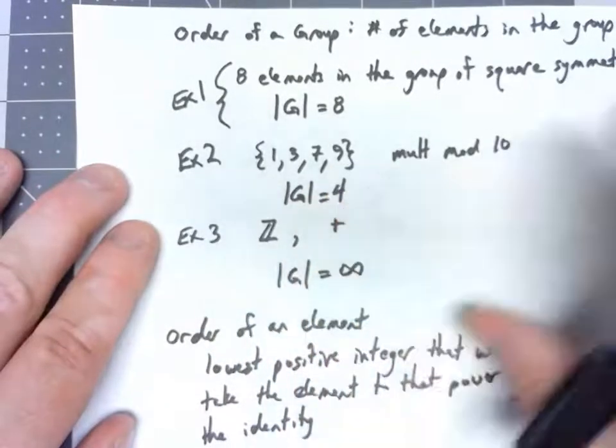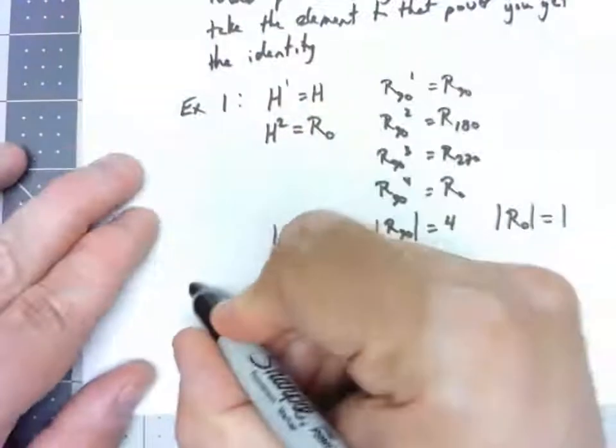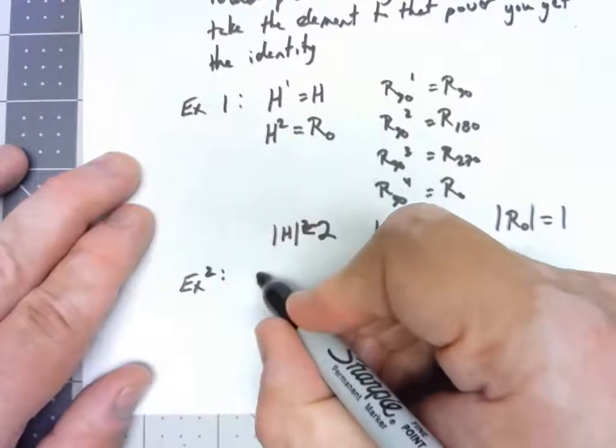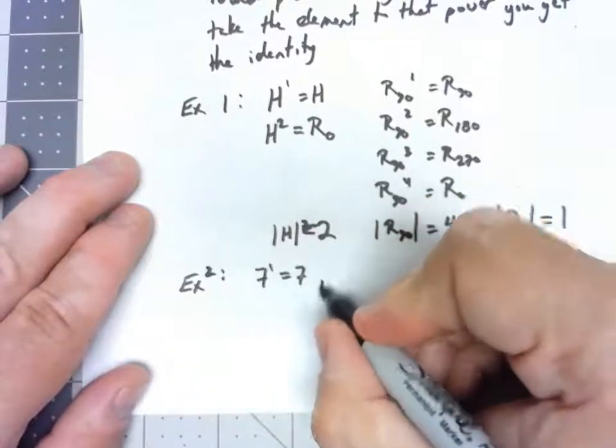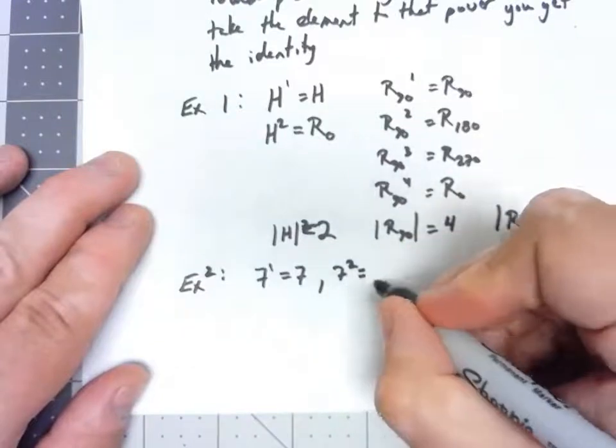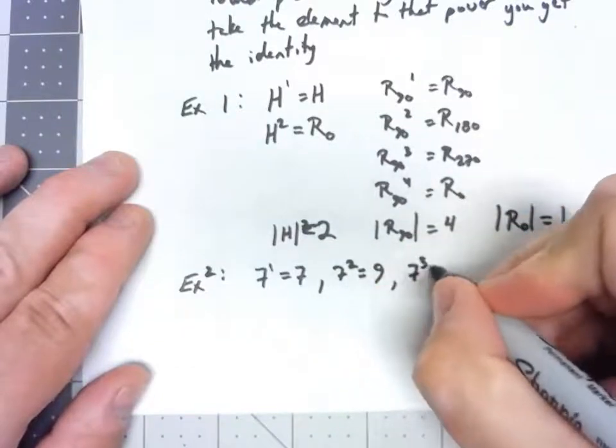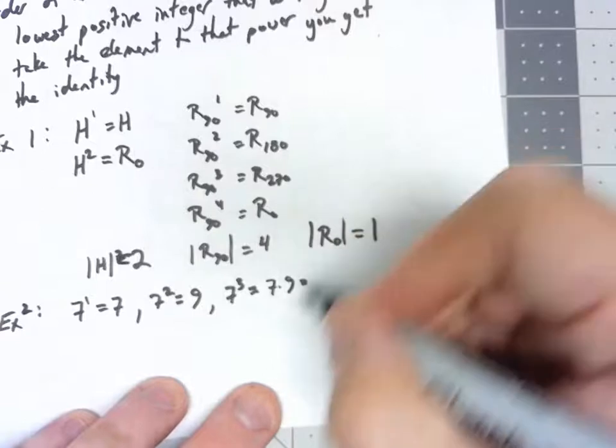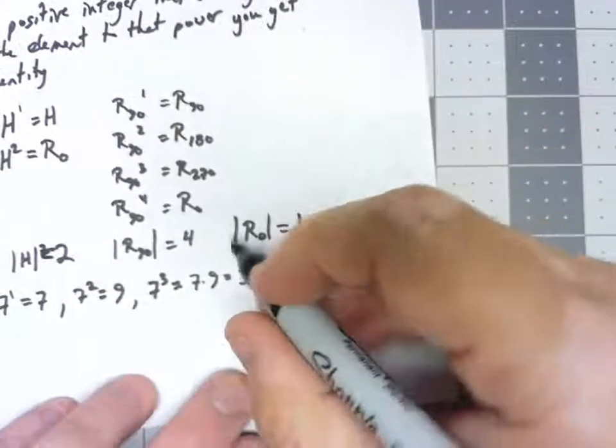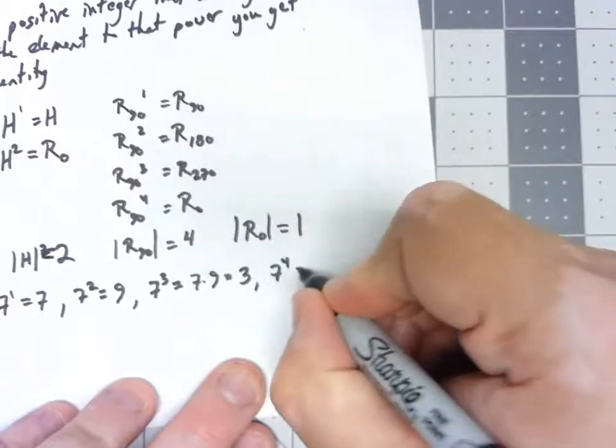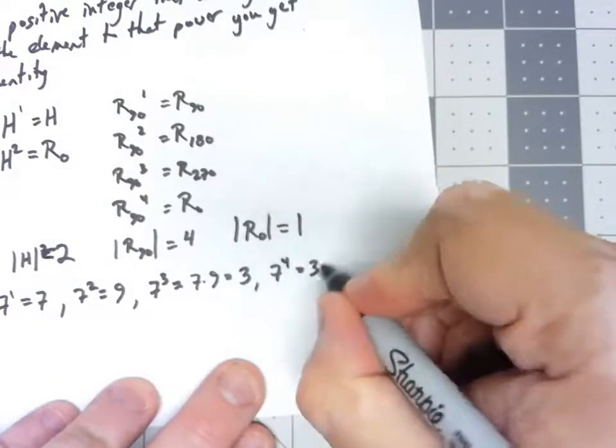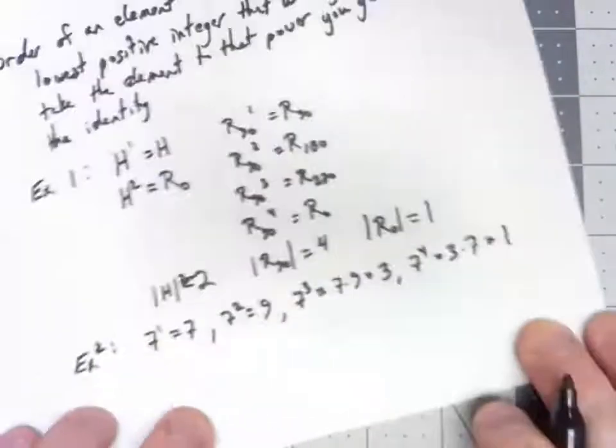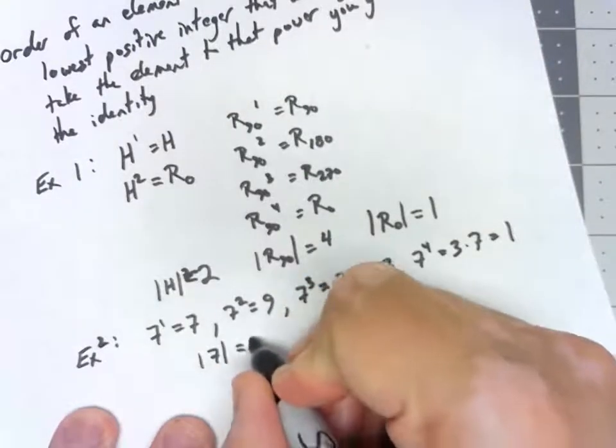Let's take one from this group right here. If I take the element 7, 7 to the first is 7, 7 squared is 49, which is 9. 7 cubed would be 7 times 9, 63 mod 10 is 3. And 7 to the fourth, we know 7 cubed is 3 times another 7, 21 mod 10 is 1. So the order of 7 would be 4.